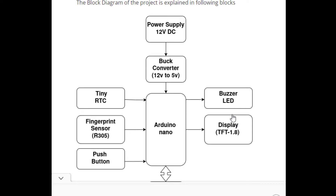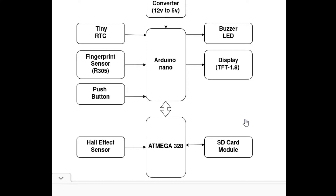Our first Arduino takes real-time date and time from TinyRTC. The fingerprint sensor is connected to Arduino Nano, where it sends finger images to the Arduino. Push buttons are used for discounted passengers like students and old-aged persons, set as input to Arduino Nano. Buzzer and TFT display are set as outputs of the first Arduino. We have used an ATmega chip as another microcontroller which continuously monitors input from the Hall effect sensor. The SD card module is connected to the same controller, which saves all data for future analysis.